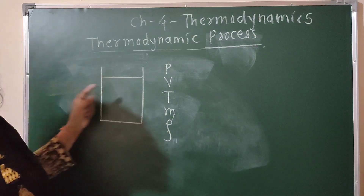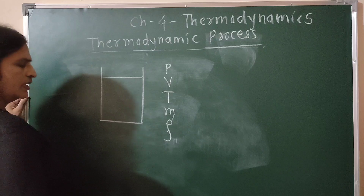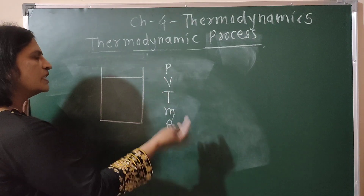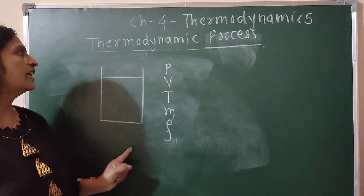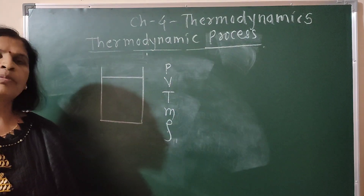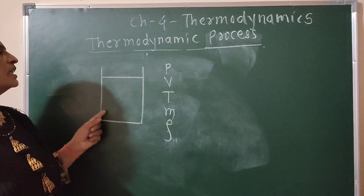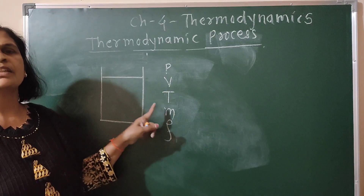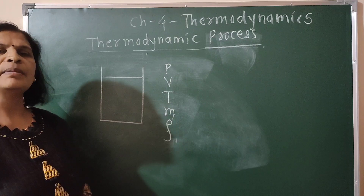When we supply heat to a system, these variables get changed — the initial state and final state change. That is called a thermodynamic process. A thermodynamic process is a process in which the thermodynamic parameters or thermodynamic state of a system keep changing. That process is called a thermodynamic process.